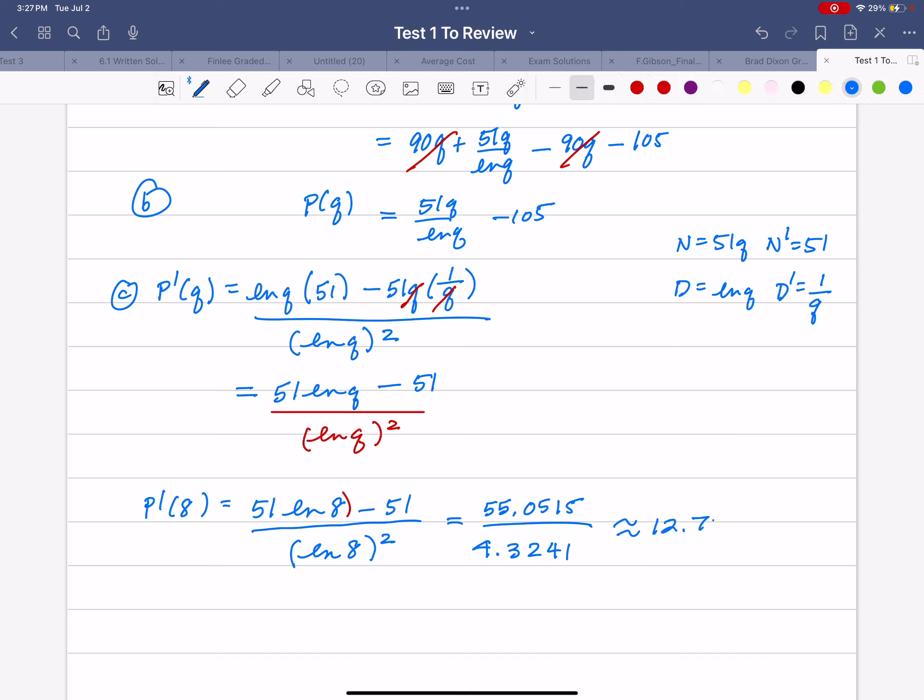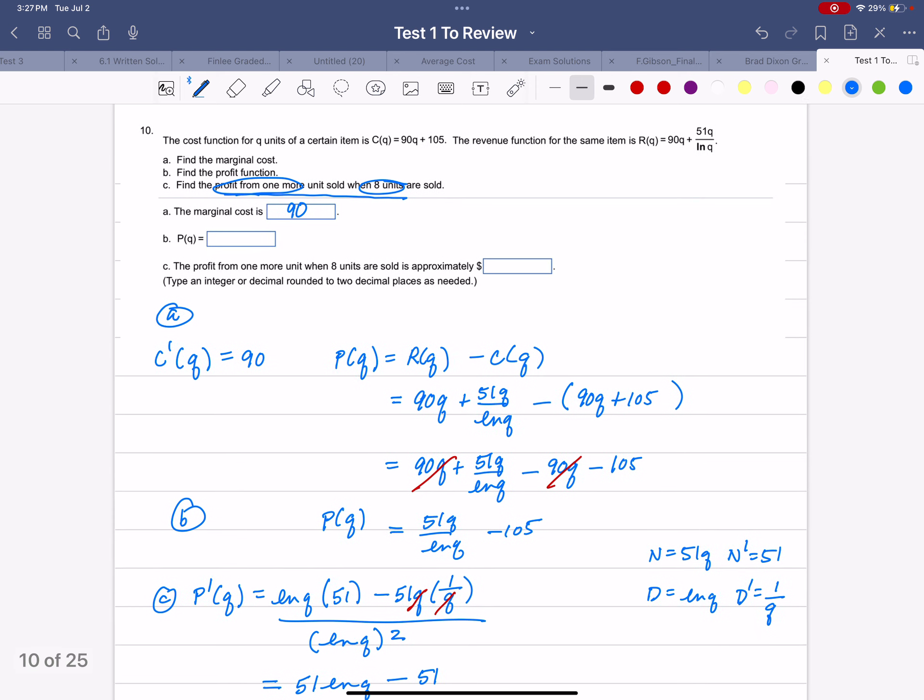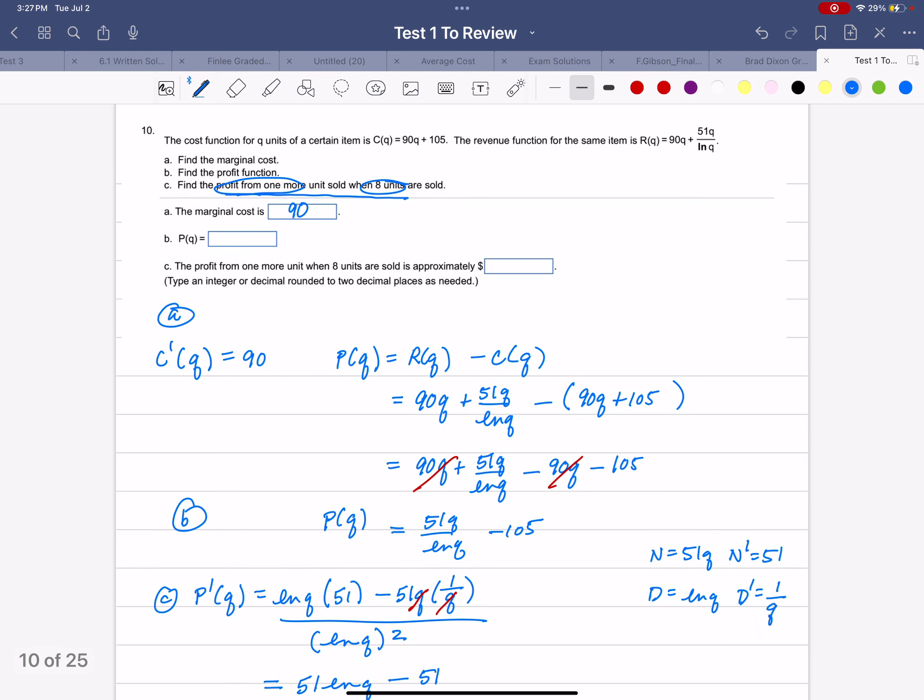12.73. So that means profit is changing by about $12.73 for the ninth unit, the next unit.